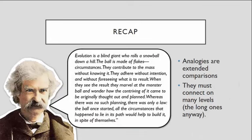Evolution is a blind giant who rolls a snowball down a hill. The ball is made of flakes — those are circumstances. They contribute to the mass without knowing it. They adhere without intention and without foreseeing what is to result. When they see the result, they marvel at the monster ball and wonder how the contriving of it came to be, originally thought out and planned — whereas there was no such planning; there was only a law. The ball once started, all the circumstances that happened to lie in its path would help build it in spite of themselves. So there are circumstances in evolution that we can't control. We can only stand back and marvel at how incredible it all is. That is a good analogy.